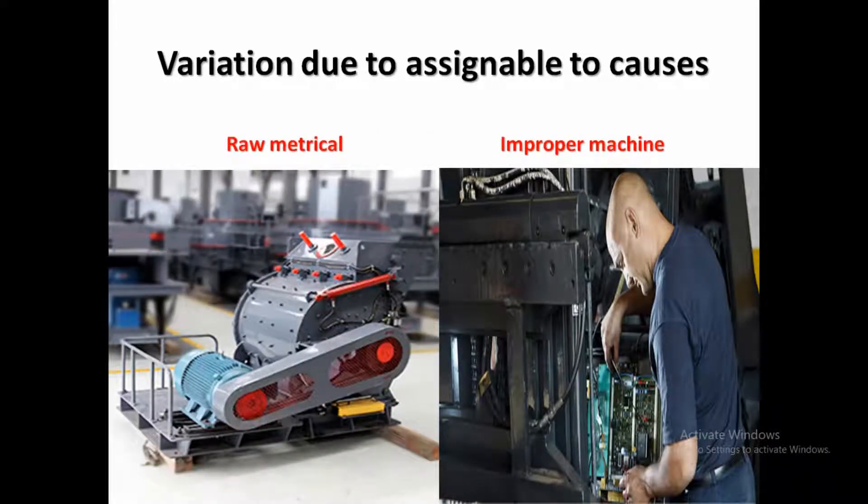Variation due to assignable causes: if a specific cause can be assigned to a variation in quality, such a cause is called an assignable cause. Variation due to such causes would be permanently observable. Assignable causes may include use of substandard raw materials, improper machine setting, wrong handling of machines, power variations, etc. Assignable causes can be identified and eliminated so that the process becomes free of such variation. If allowed to continue, they will create a serious effect on the quality of the product.